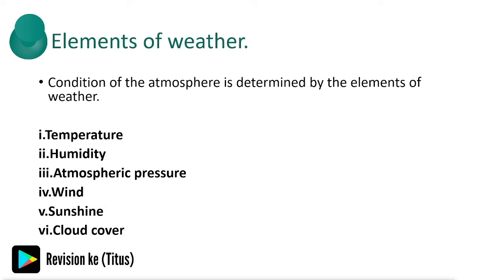The elements of weather are as follows: temperature, humidity, atmospheric pressure, wind, sunshine, and cloud cover.